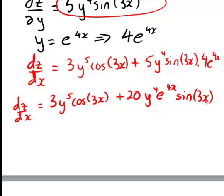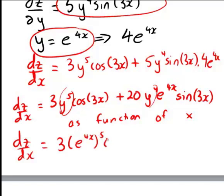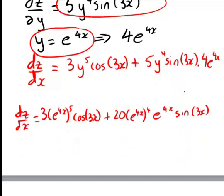You'll notice that that expression is in terms of both x and y. If we wanted to rewrite this just as a function of x, we could substitute y equals e to the 4x into the relevant parts of this expression. So dz/dx becomes 3 times e to the 4x raised to the power of 5 times cos 3x, plus 20 times e to the 4x to the power of 4, still multiplied by e to the 4x times sine 3x.